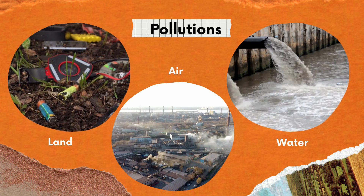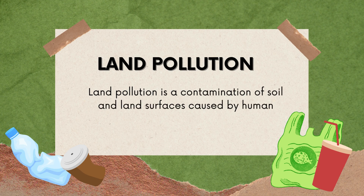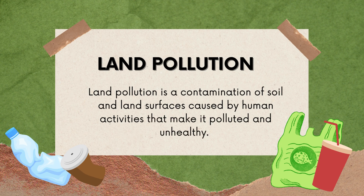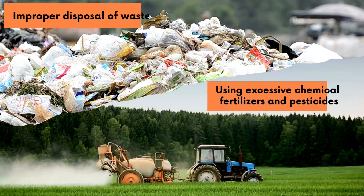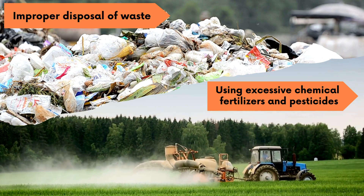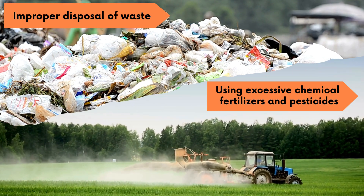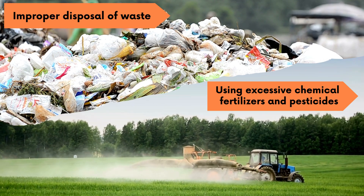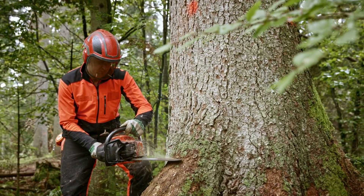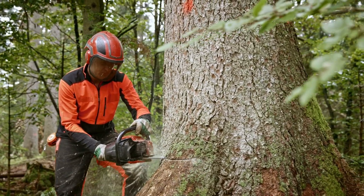Land pollution is the contamination of soil and land surfaces caused by human activities that make them polluted and unhealthy. It occurs when people throw garbage and waste on the ground instead of putting it in proper places, practice improper farming by using excessive chemical fertilizers and pesticides, and cut down too many trees. These human activities can hurt animals and plant habitats.